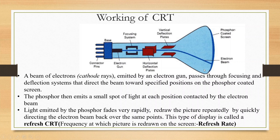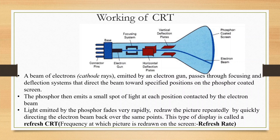The phosphor emits a small spot of light at each position contacted by the electron beam. However, this light rapidly fades out — after the phosphor emits light it doesn't persist, it will fade out. So we repeatedly redraw the picture by quickly directing the electron beam back over the same points. This type of display is called a Refresh CRT.